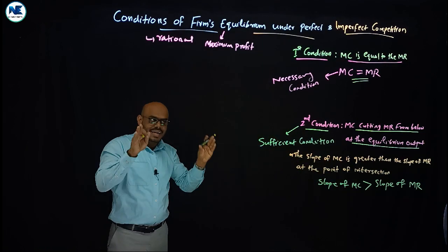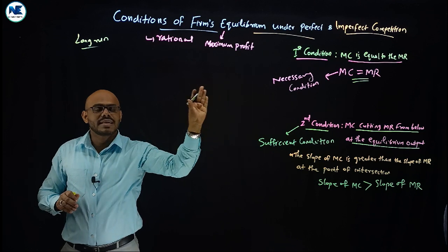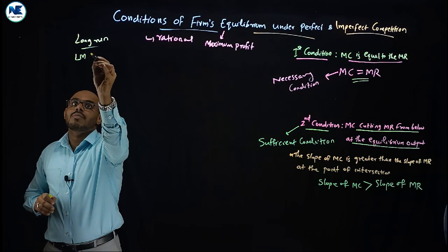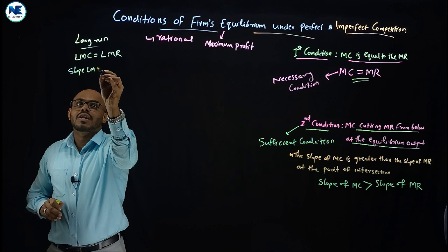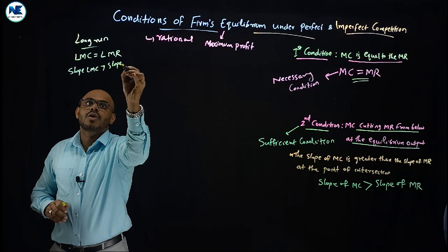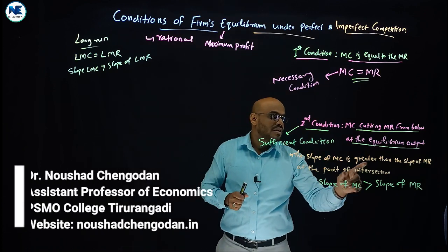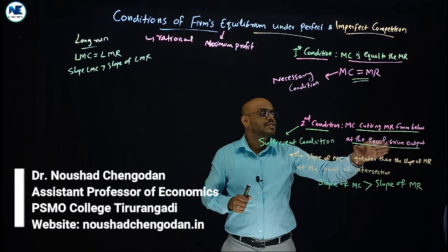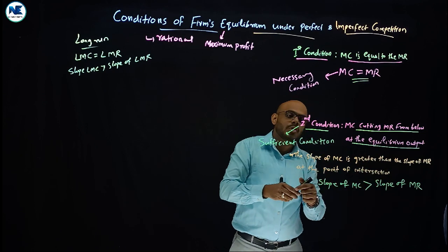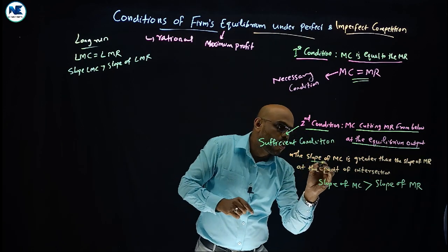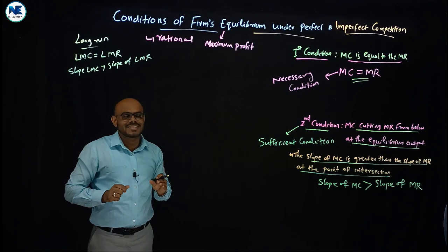These conditions apply at both the short-run and long-run levels. In the long run: long-run marginal cost equals long-run marginal revenue, and the slope of long-run marginal cost is greater than the slope of long-run marginal revenue. That is, the long-run marginal cost must cut marginal revenue from below at the equilibrium output, at the point of intersection.